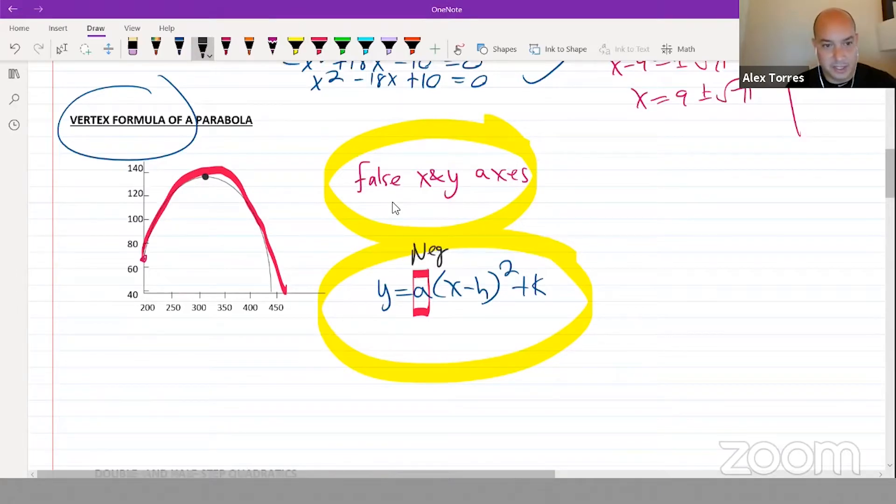The other thing is that the vertex appears to be, let's say just generalizing it, 325 slash 130. Right? So then the h and the k in the vertex form are going to be 325 and 130 right there.